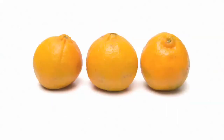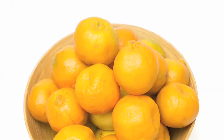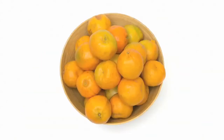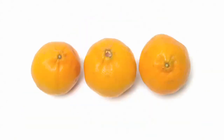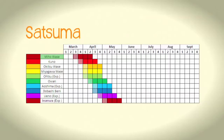Satsuma cultivars are the earliest ripening soft citrus fruit. The fruit is usually seedless, with a loose rind that peels very easily. The most popular Satsuma variety is Miho Wase, making up 85% of the Satsuma production. Miho Wase is also the cultivar that matures the earliest of the Satsuma cultivars and can be harvested from as early as mid-March. Other Satsuma cultivars are harvested until around the end of May.